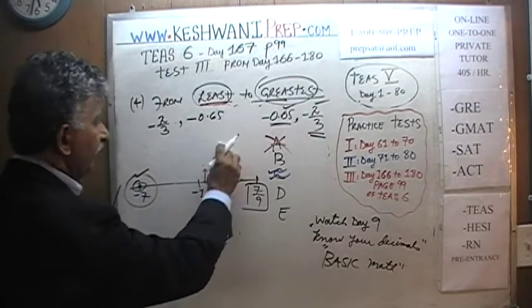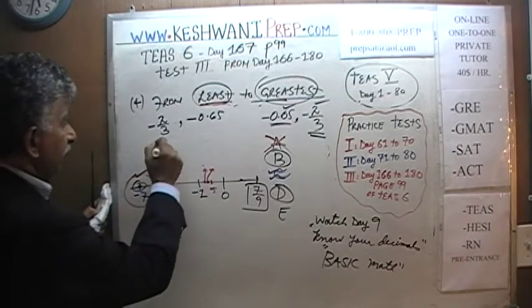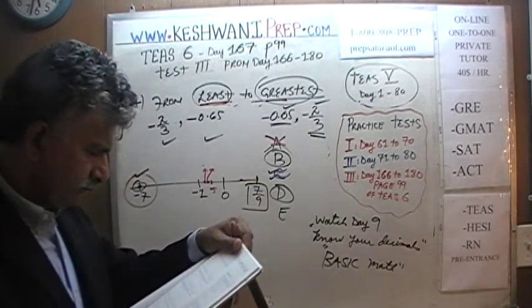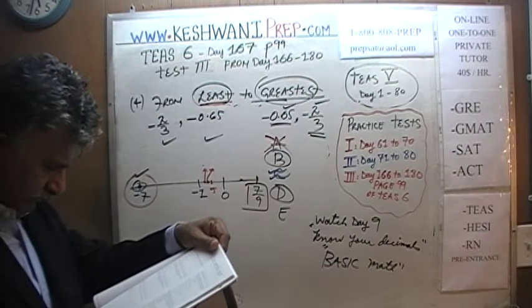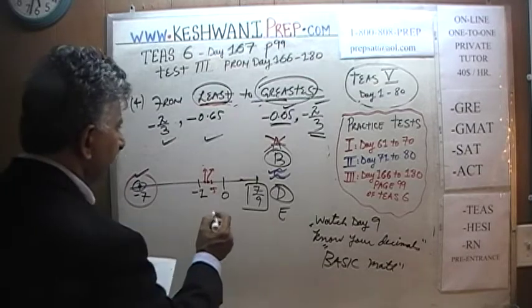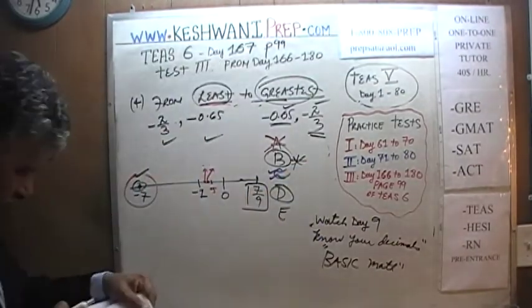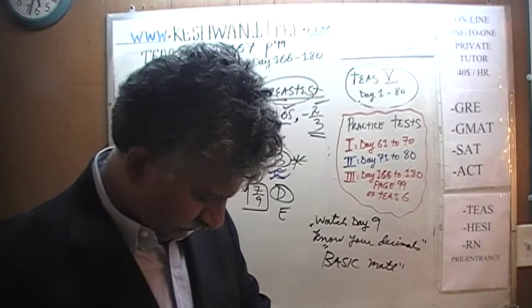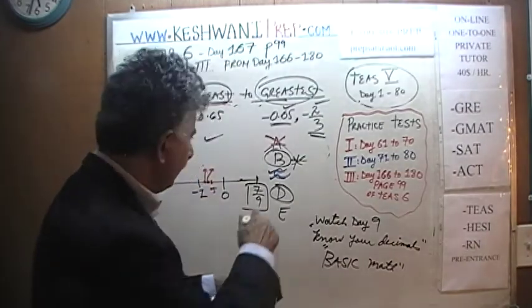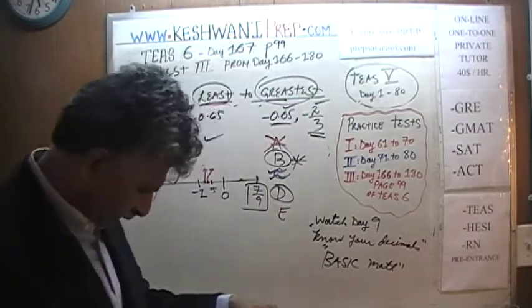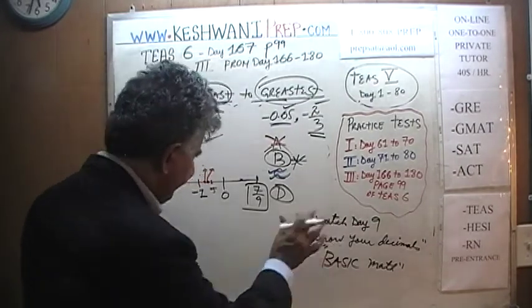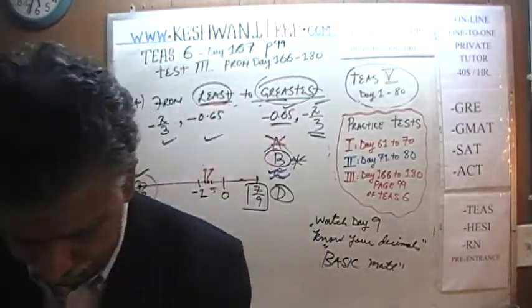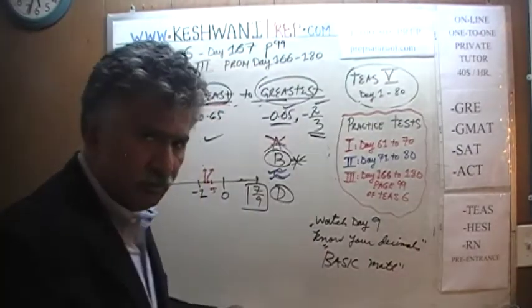Since we are left with only B and D, only one of them has negative 2/3 before negative 0.65. Checking the book: B says negative 2/3 and then negative 0.65 — that's correct. D has it the other way around, so D is wrong. The answer is B. I'll see you tomorrow. Bye!